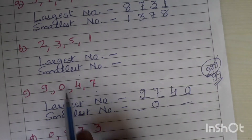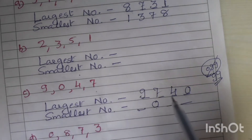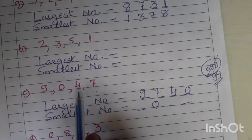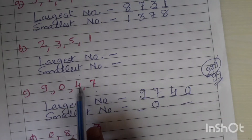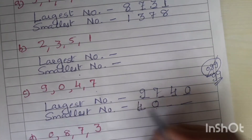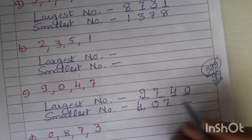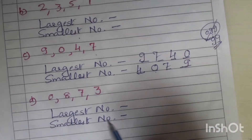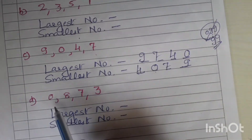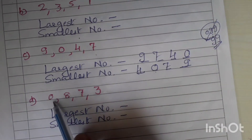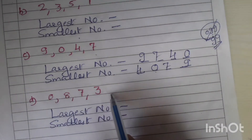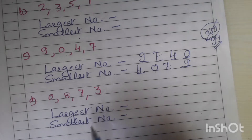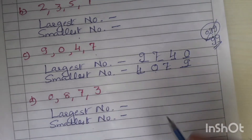So for the smallest 4-digit number with digits 9, 0, 4, 7: 0 cannot be the leftmost digit, so it takes the second position. Write from small to big — the least number after 0 is 4. So the smallest number is 4, 0, 7, 9.